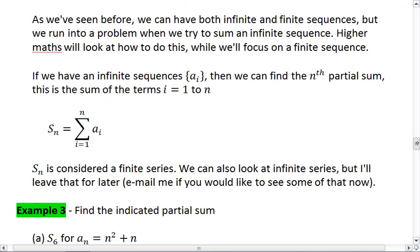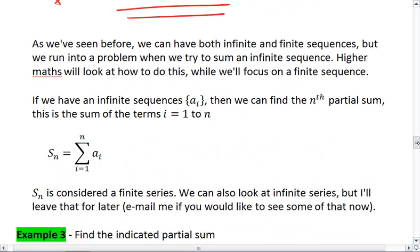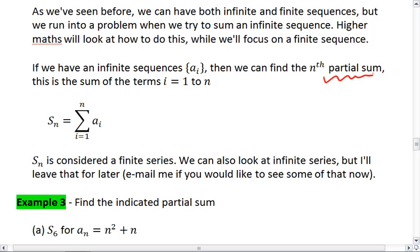When we do that, say we have an infinite sequence like the one here, but we only want to sum the first five terms. This is called a partial sum, and we can find the nth partial sum we want. So if we wanted the first five terms, we would call this S_5, and this will equal the summation from i equals 1 to 5 of our sequence. If we wanted the 10th partial sum, this would be the summation from i equals 1 to 10 of our sequence.